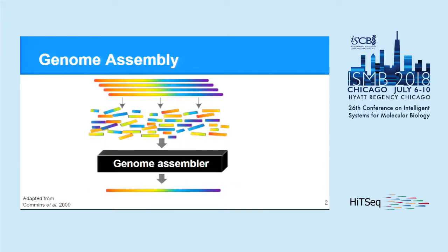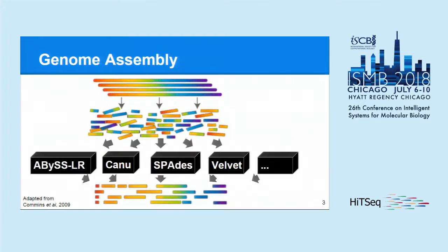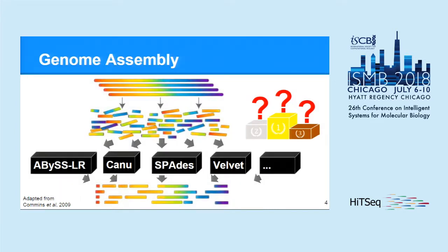As you know, DNA sequencing involves cloning of a genome and then splitting it into small fragments, which can then be computationally assembled using special software into a genome sequence. In the real world, there are many different assemblers — some of which are presented today — and there is a need to compare them with each other and to find the best one for each particular study or dataset.